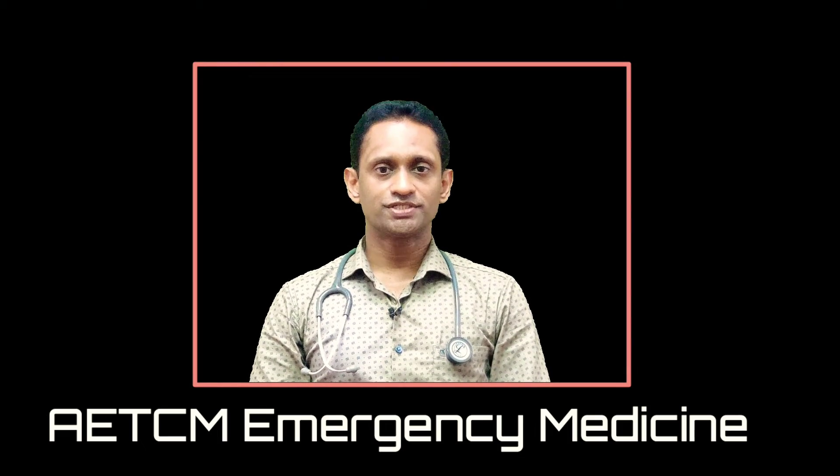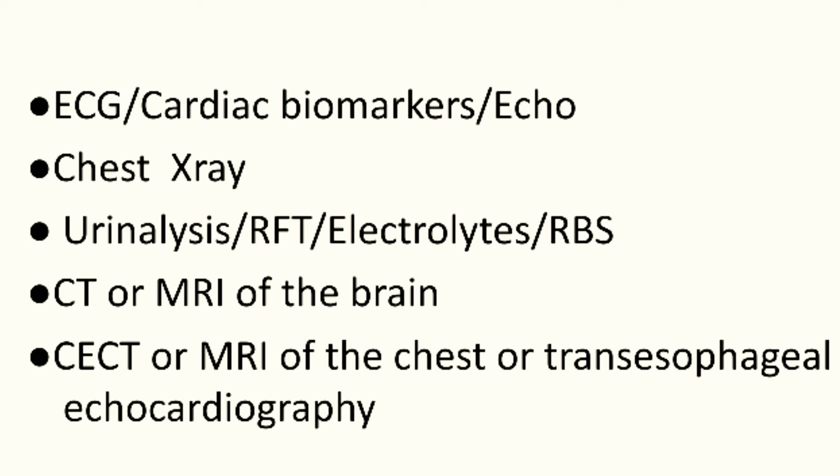For investigations, if cardiac involvement is suspected, we look for ECG, cardiac biomarkers, and bedside echo. A chest X-ray is obtained. If renal involvement is suspected, urinalysis and renal function test with electrolytes and random blood sugar. A CT or MRI of the brain for neurological involvement, and a CT or MRI of the chest or transesophageal echo if aortic dissection is suspected.